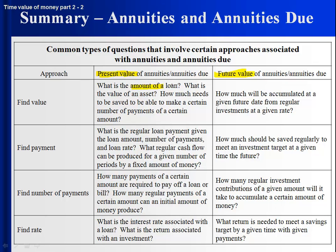When you want to find the value — how much is the amount of a loan, what's the value of an asset, how much needs to be saved to make a certain number of payments of a certain amount — be particularly careful: how much do I need to have at retirement to withdraw a certain amount every period for a certain amount of time? You might think that's future value since you're saving, but it's actually a present value — the present value of all those withdrawals equals that stack of money. Future value is about how much will be accumulated from savings; present value is about how much needs to be accumulated.